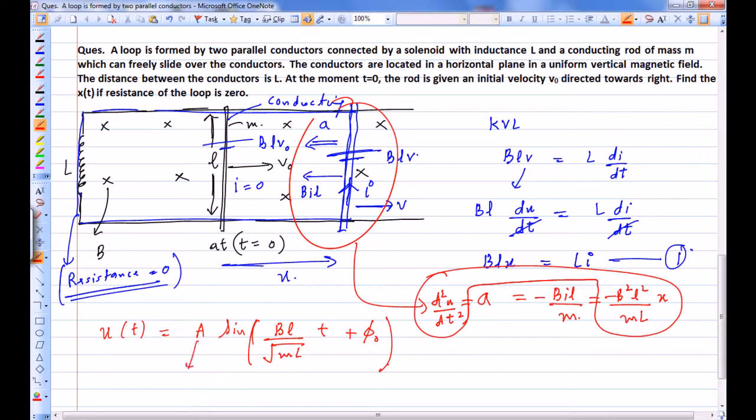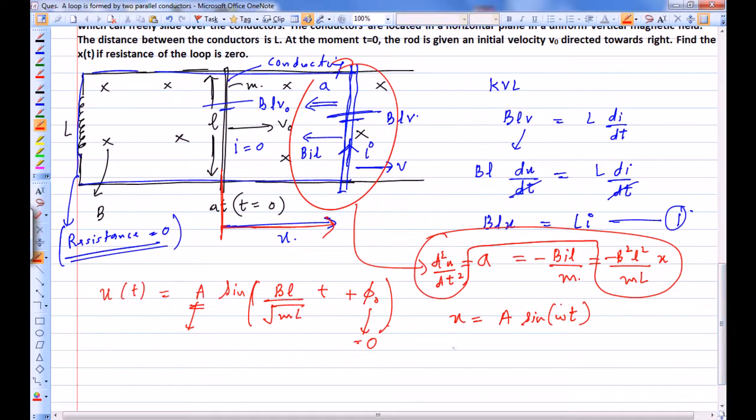Now our A and φ₀ are unknowns dependent on initial conditions. At t = 0, x = 0—if I take this to be x, at t = 0, x is 0. That actually implies φ₀ is 0. And now only one unknown is left, A, so we have x = A sin(ωt). Now how can we take this? We can say that our maximum velocity is at the mean position.